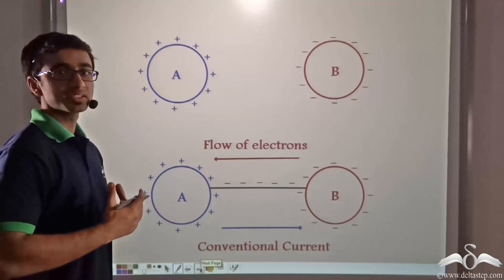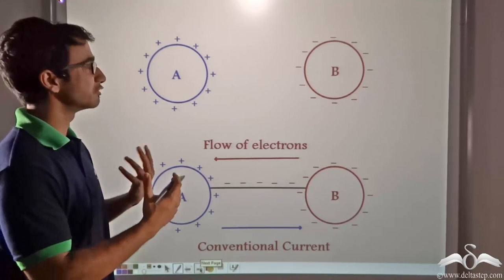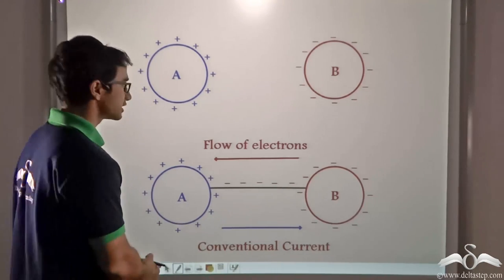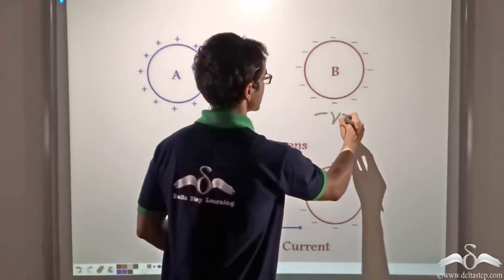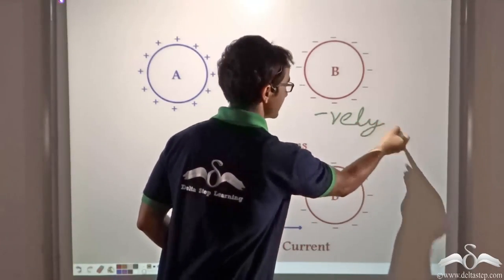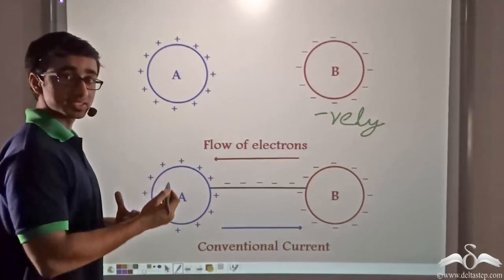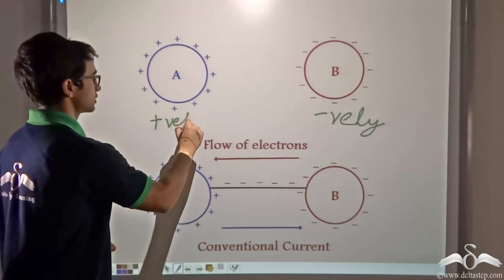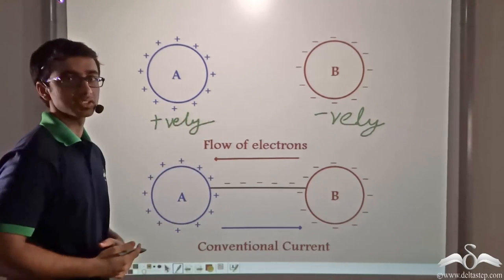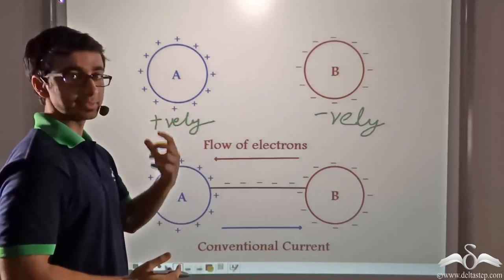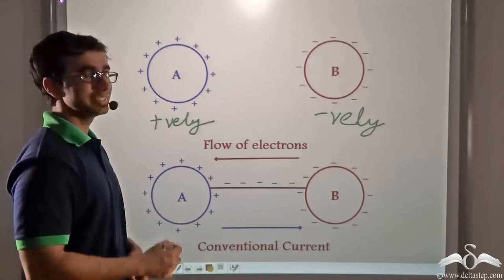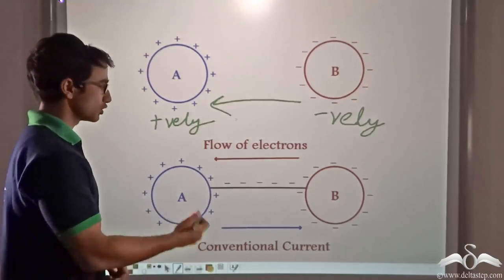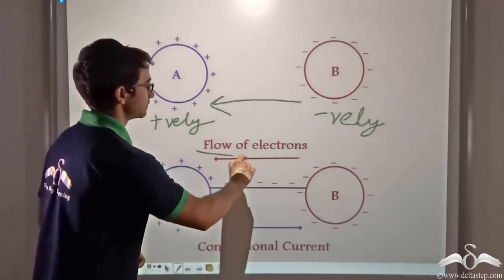In a similar manner, when we consider two bodies that are differently charged — a body that has an excess of electrons and is negatively charged, and a body that has a deficit of electrons and is positively charged — when we connect them, electrons flow from the negatively charged body to the positively charged body, as you can see.